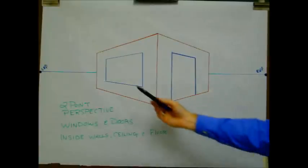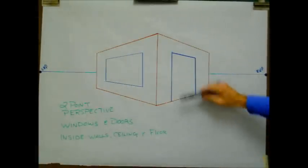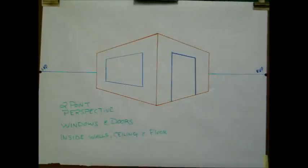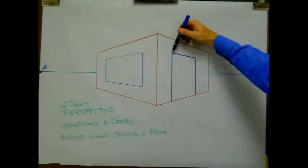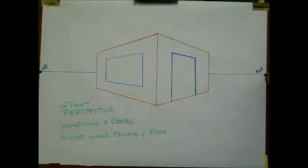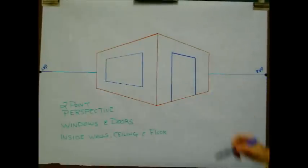So now I have a window and a door — they're closed, you can't see into the building yet. Go ahead and draw in the top of the door frame to your right vanishing point, and then the right side vertical. Go ahead, pause here, and pick it up in a moment.